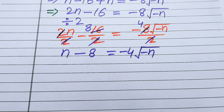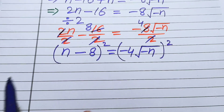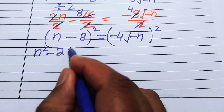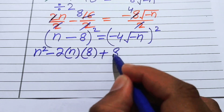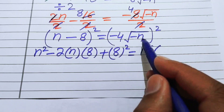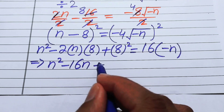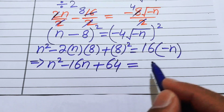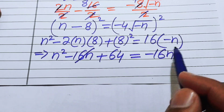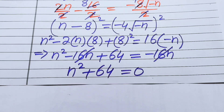In the next step we take the square on both sides again. Expanding the left side using (a−b)² gives: n² minus 2·n·8 plus 8² equals (−4)²·(−n). So n² minus 16n plus 64 equals 16·(−n), which is −16n. The minus 16n terms cancel on both sides, leaving n² plus 64 equals 0.